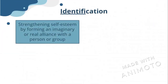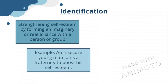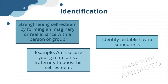Identification is strengthening self-esteem by forming an imaginary or real alliance with another person or group. An example of identification is when an insecure young man joins a fraternity to boost his self-esteem. To remember identification, keep in mind that 'identify' means establishing who someone is — a person who uses identification tries to identify with another group in order to fit in and feel good about themselves.